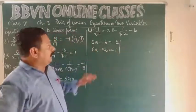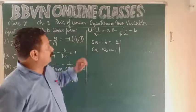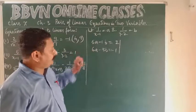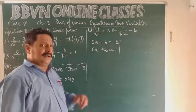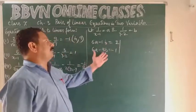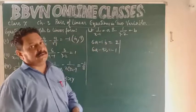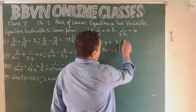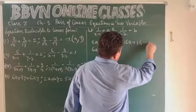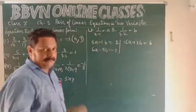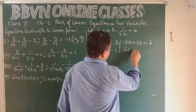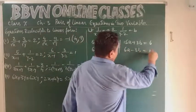To equalize the B coefficients, we don't need to touch the second equation. We multiply the first equation by 3: giving 15A + 3B = 6. The second equation remains as it is: 6A - 3B = 1.